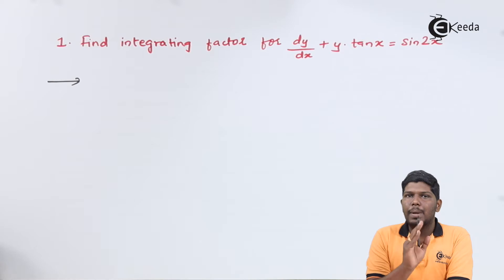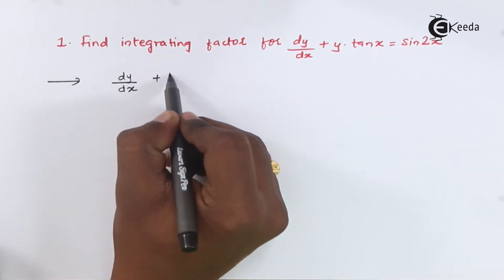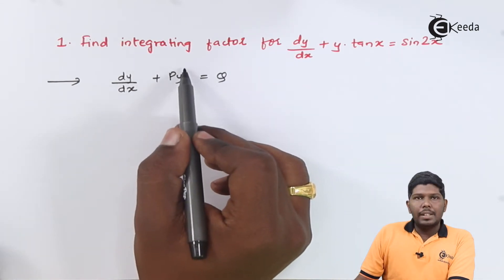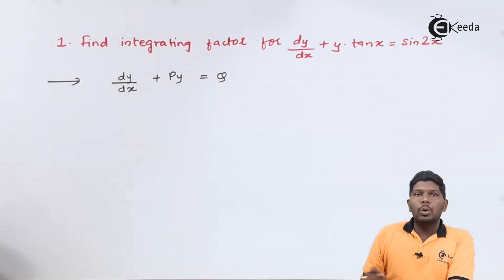One says dy/dx + Py = Q, where the power of y should be compulsory one, and P and Q can be constants or functions of x.